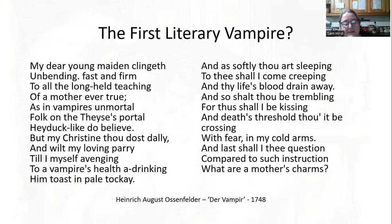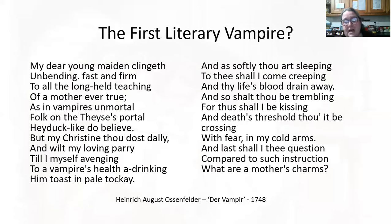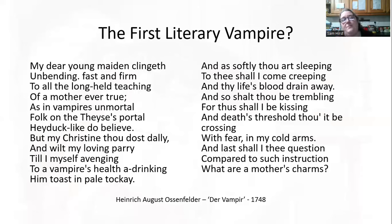The Ossenfelder poem in translation: 'My dear young maiden clingeth / and bending fast and firm to all the long-held teaching of a mother ever true / As in vampires and mortal folk on the phasis portal, hadoc-like do believe. / But my Christine, thou dost dally / and wilt my loving parry, / till I myself avenging to a vampire's health a-drinking, him toast in pale tokay. / And as softly thou art sleeping, to thee shall I come creeping, and thy life's blood drain away. / And so shalt thou be trembling, for thus shall I be kissing / and death's threshold thou be crossing with fear in my cold arms. / And last shall I thee question, compared to such instruction, what are a mother's charms?' This first example of the vampire is male — a lot of early vampires are female — and it's connected to quite predatory but irresistible seduction, as the last lines suggest.